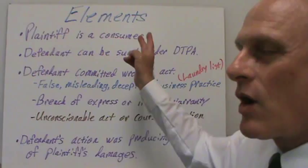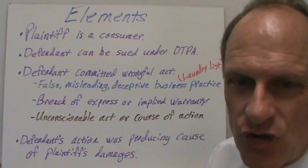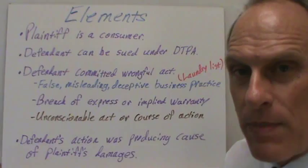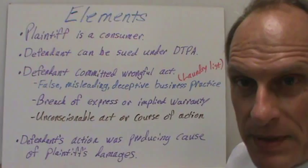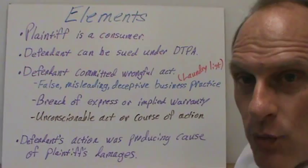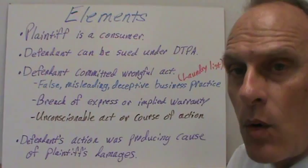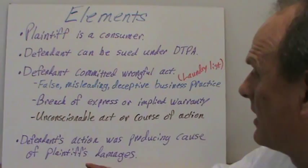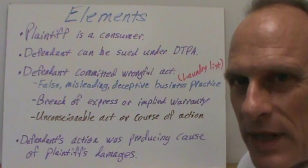What are the elements of being able to file a lawsuit under the DTPA? First, the plaintiff has to be a consumer — someone seeking to buy or purchase goods or services. Second, the defendant has to be someone who can be sued under the DTPA. Third, the defendant must have committed a wrongful act: false, misleading, or deceptive business practices; breach of an express or implied warranty; or an unconscionable act or course of action. And finally, the defendant's action must be the producing cause of the plaintiff's damages.